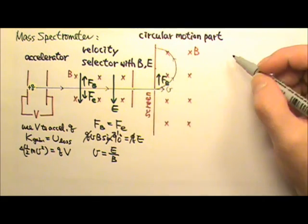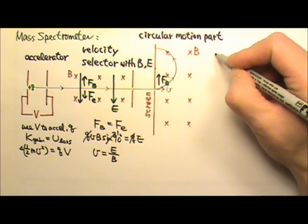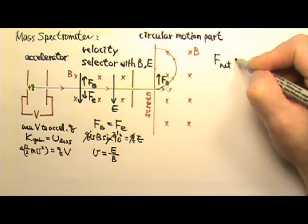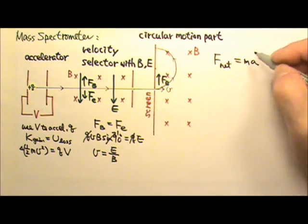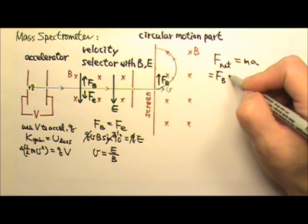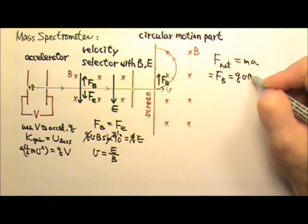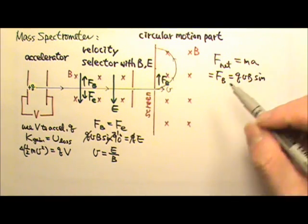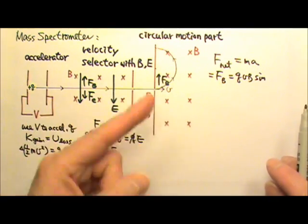For the circular motion part, we can write the force equation. Net force equals ma. And this net force is the magnetic force, which is qvB times sine of the angle between v and B.